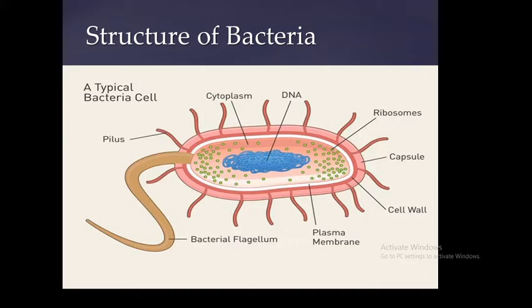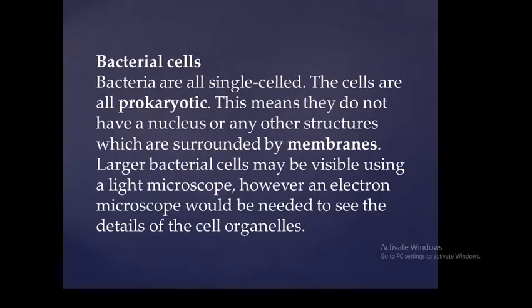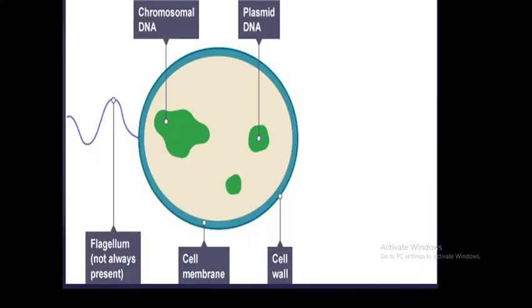The structure of bacteria consists of: a capsule as the outer layer, then the cell wall, plasma membrane, ribosomes, DNA, cytoplasm, and flagellum. Bacteria are single cells and are prokaryotic, meaning they don't have a nucleus or any other membrane-bound structures. Large bacterial cells may be visible using a light microscope, but an electron microscope is needed to see cell organelle details such as the cell wall, cell membrane, flagellum, plasmid DNA, and chromosomal DNA.